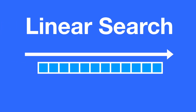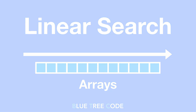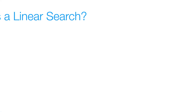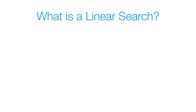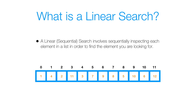Hey everyone, so you'll be doing a linear search on arrays, so let's get started. A linear or sequential search involves inspecting each element in a list in order to find the element we're looking for.